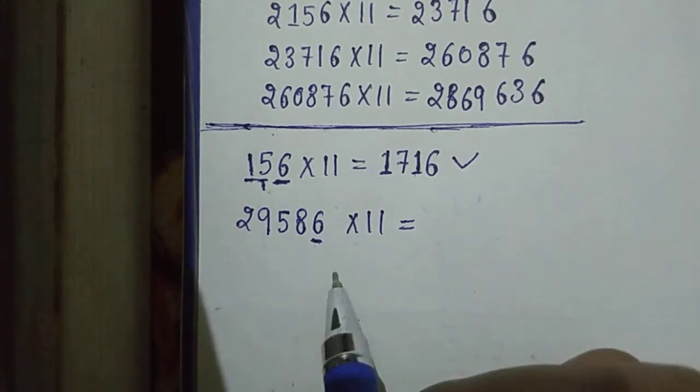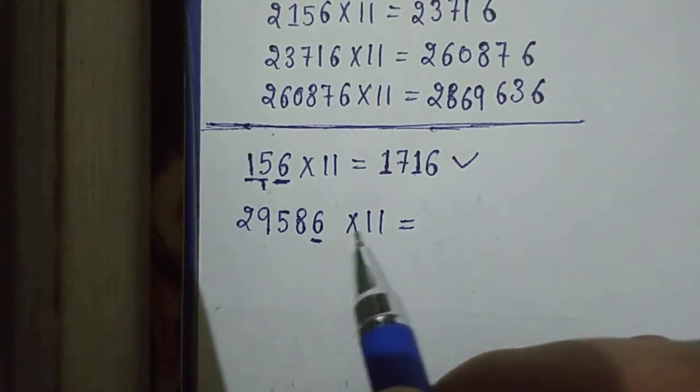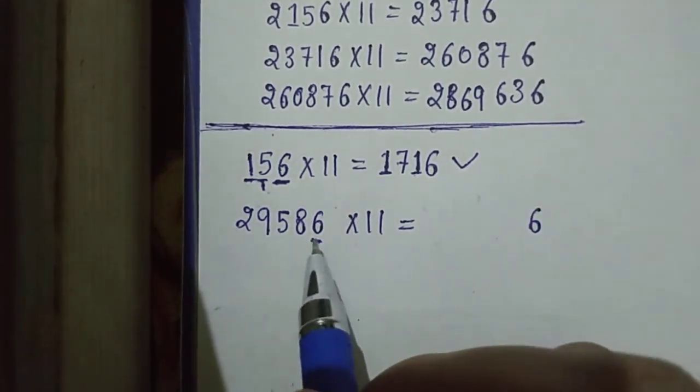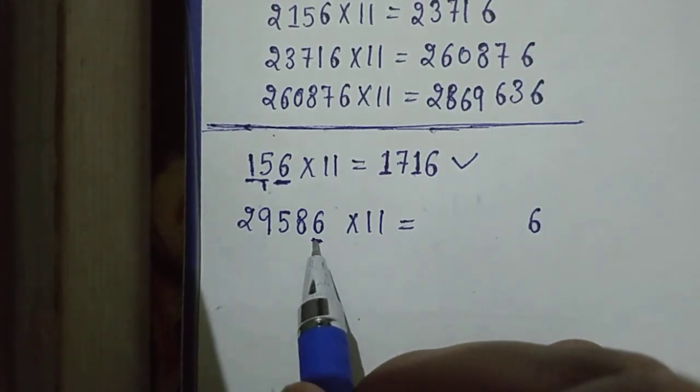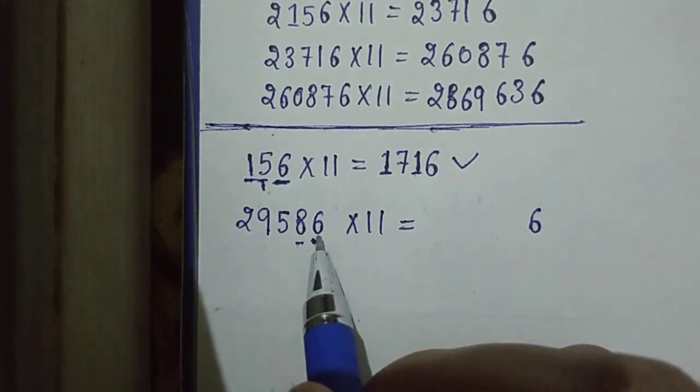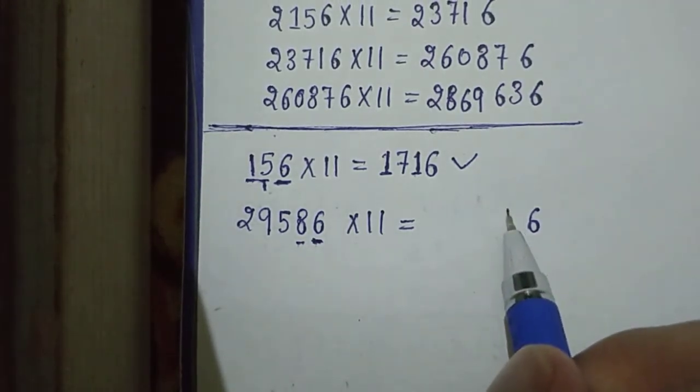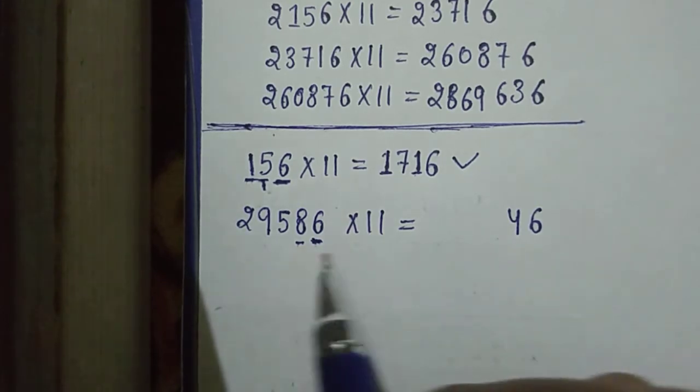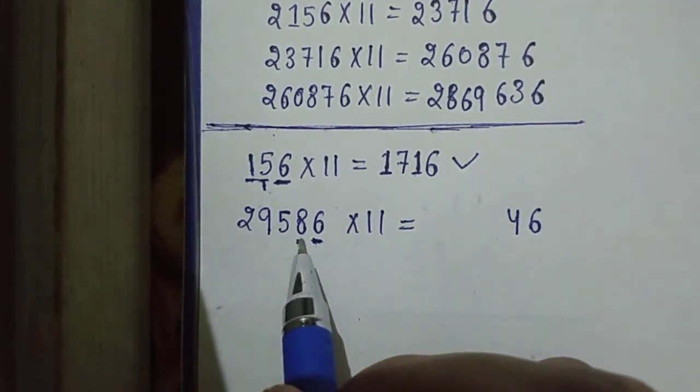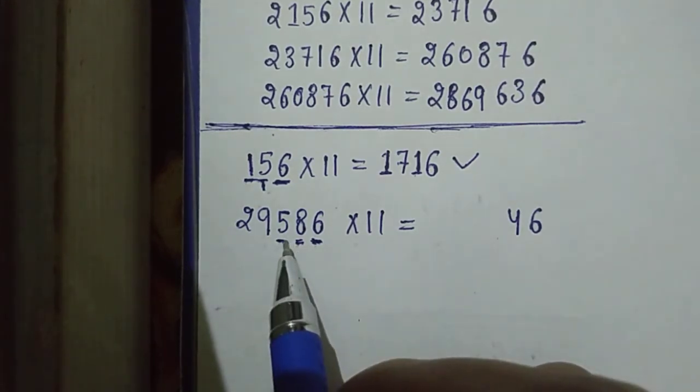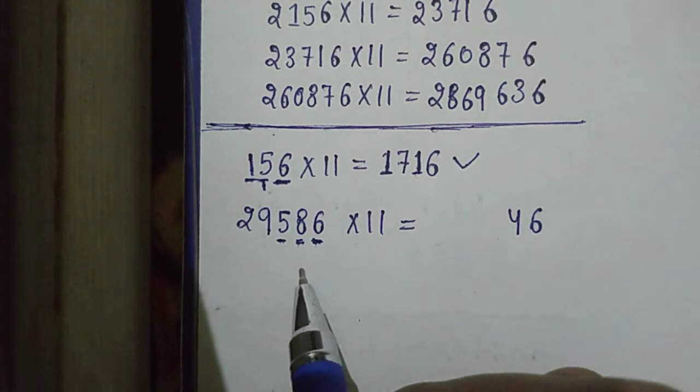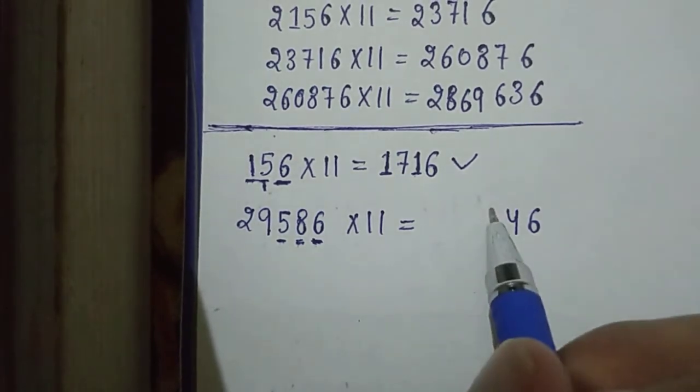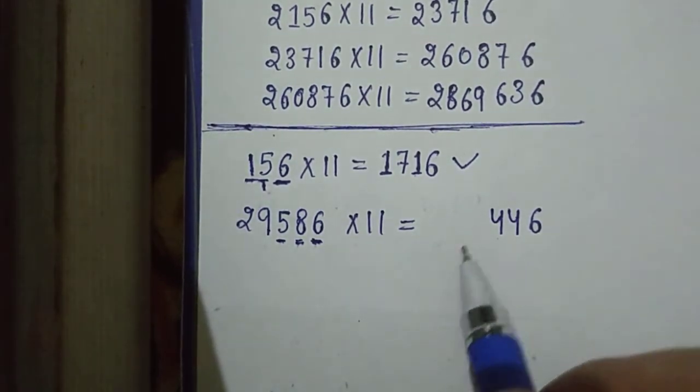Then, we will add 6 and 8. So, 8 plus 6 is equal to 14. Then, 4 at here and 1 as carry. Then, we will add 8 and 5. So, 8 plus 5 is equal to 13 and 1 is carry. So, it is equal to 14. 4 at here and 1 as carry.